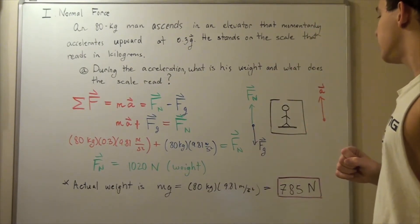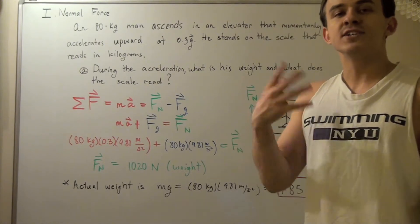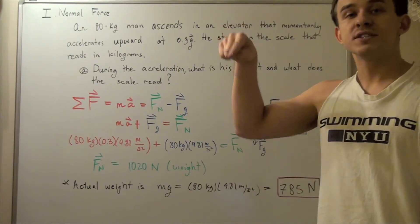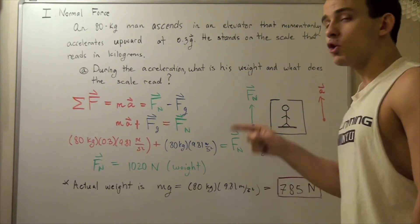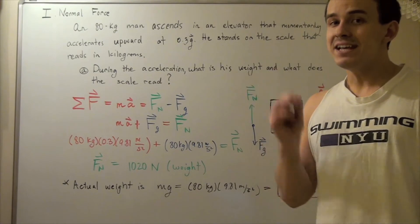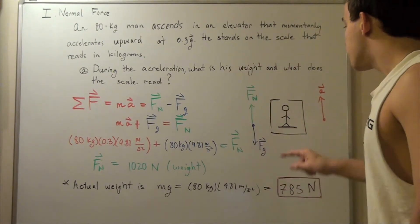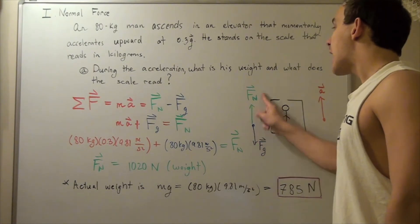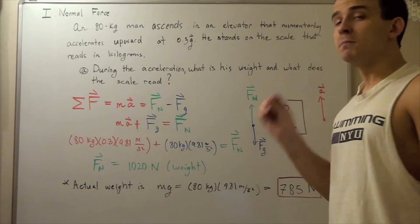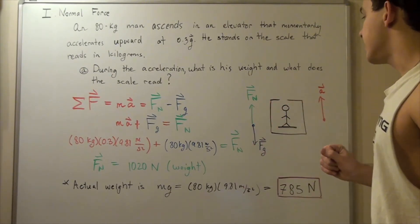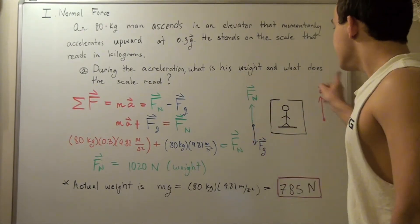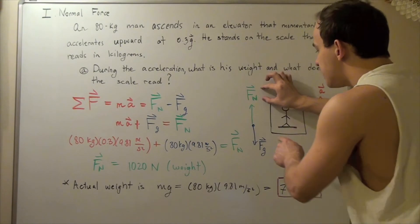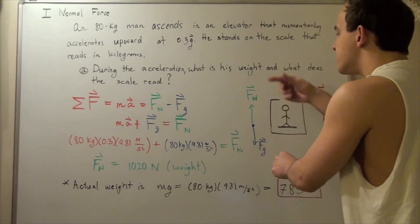The first force is the force due to gravity, which pulls the man downward — meaning the man exerts a downward force on the scale. According to the third law of motion, the scale exerts an equal but opposite force on the man, called the normal force, which is perpendicular to the surface on which the man is standing. Because the man is accelerating upward, one of these forces must be larger than the other — the normal force must be larger than the gravitational force.